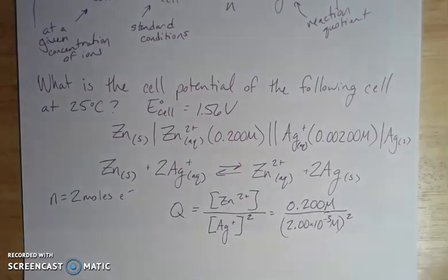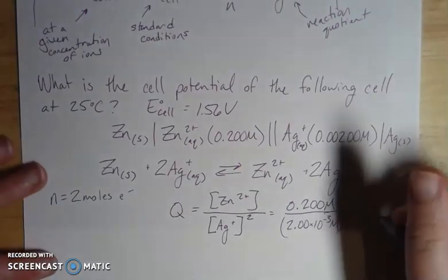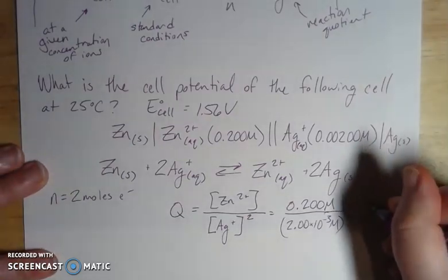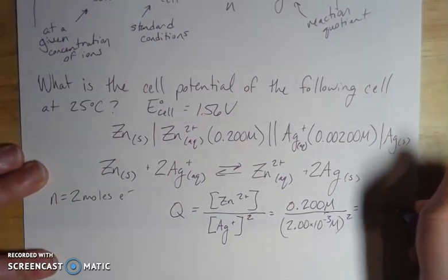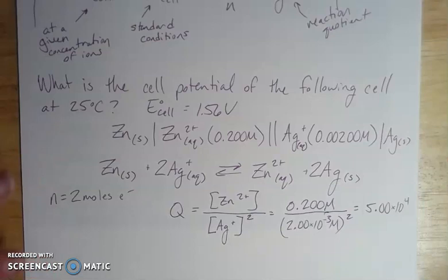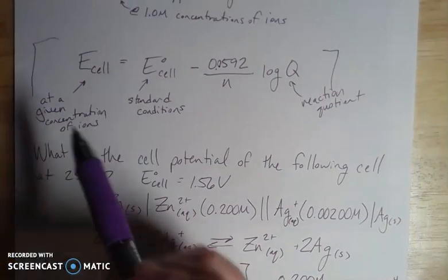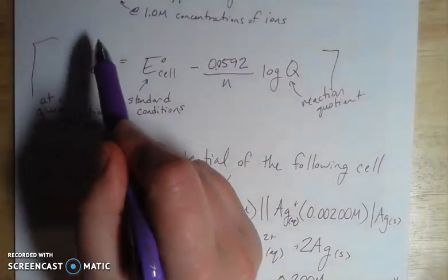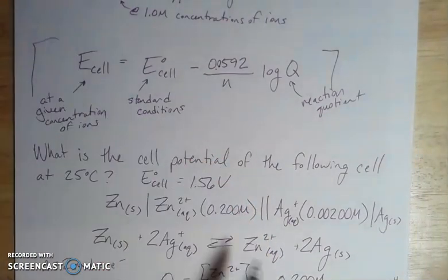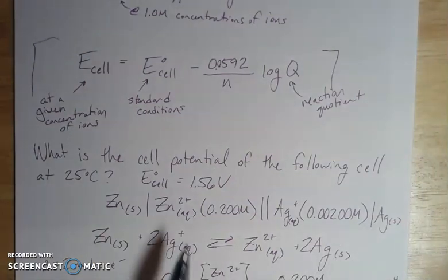I'm given these concentrations so I can plug those values in. That's going to give me some value - I got 5.00 times 10^4. I don't have a K value to compare this to, so that's not really useful right now, but it is going to be useful for plugging into our Nernst equation.